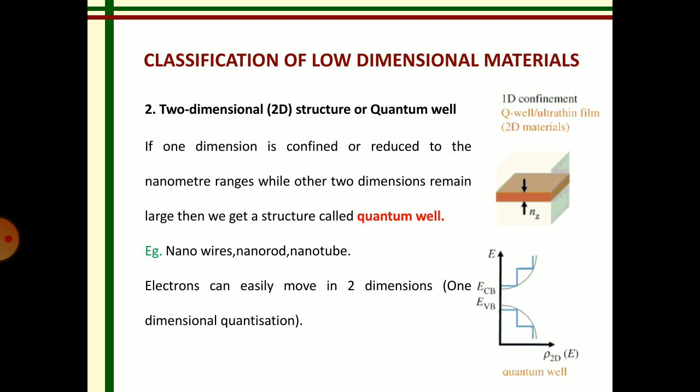Next, two dimensional structure or quantum well. Here, one dimension is confined or reduced to the nanometer scale range, while the remaining two dimensions are the same, that is, remain large. Then we will get the structure called quantum well. Example: nanowires.